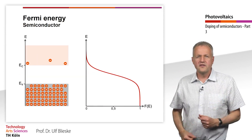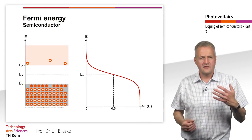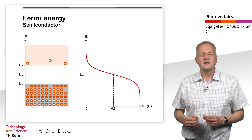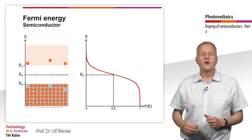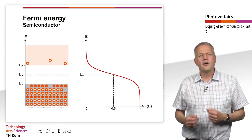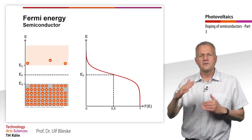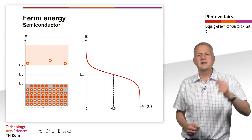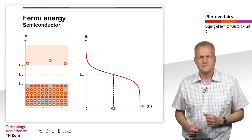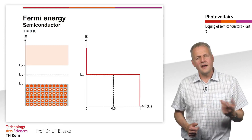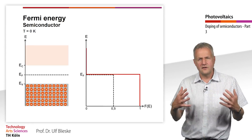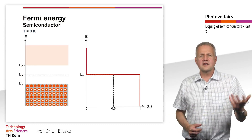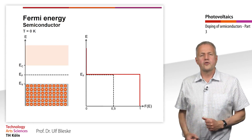We now consider the band model in an intrinsic semiconductor. The Fermi level is in the middle of the forbidden zone, the band gap. Therefore, no states exist in the region of the Fermi level. The occupation of the states in the conduction band depends on the temperature. This leads to the fact that at 0 K, the valence band is fully occupied and the conduction band is not occupied at all.